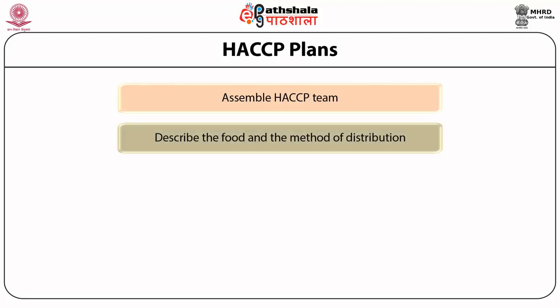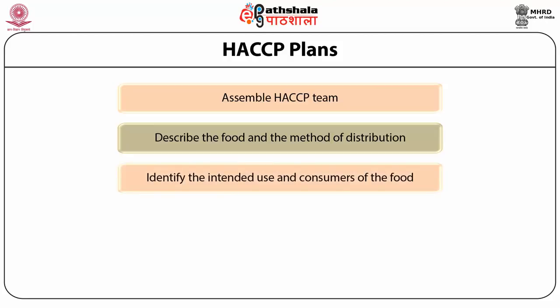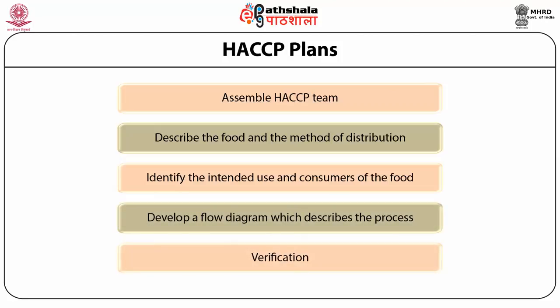The HACCP plan describes the food and the method of distribution — how foods are distributed in the community. It also identifies the intended use and consumers of the food, and how consumers can identify if a particular food is contaminated. The team develops a flow diagram describing the process, showing where contamination or spoilage of food occurs. Then verification concludes how the outbreak occurred.